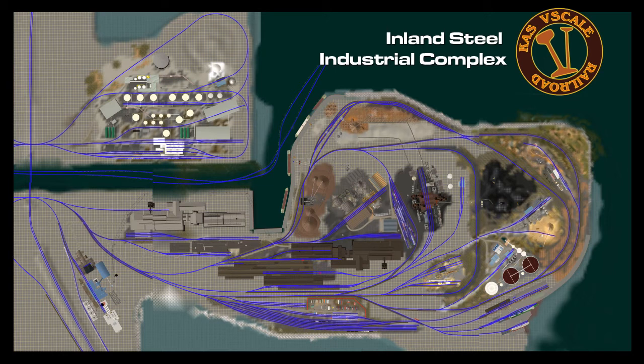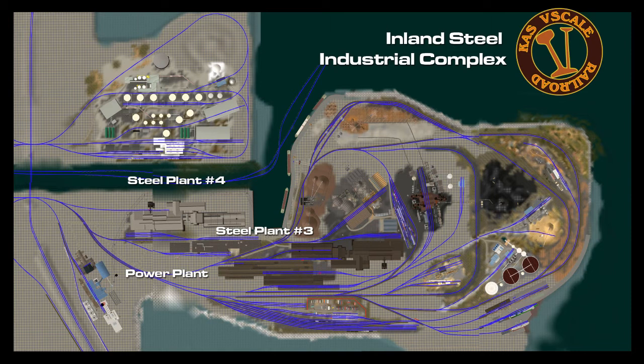Overall, I have about 16 or 17 focused areas of rail activity. Starting in the lower left-hand corner, first we have the power plant. The power plant gets coal from the coal yard and powers the entire complex. Above that is steel plant number three, part of four different steel plants.